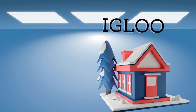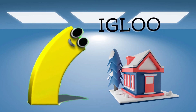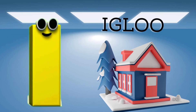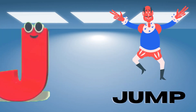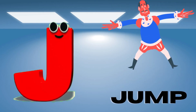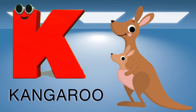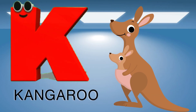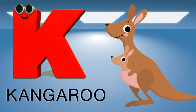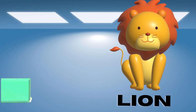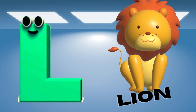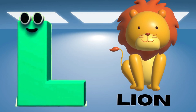I is for igloo, i-i-igloo. J is for jump, j-j-jump. K is for kangaroo, k-k-kangaroo. L is for lion, l-l-lion.